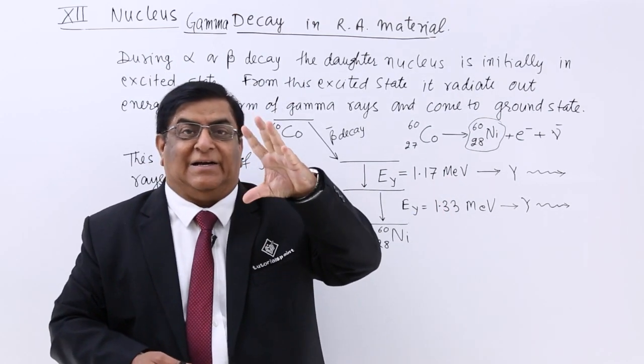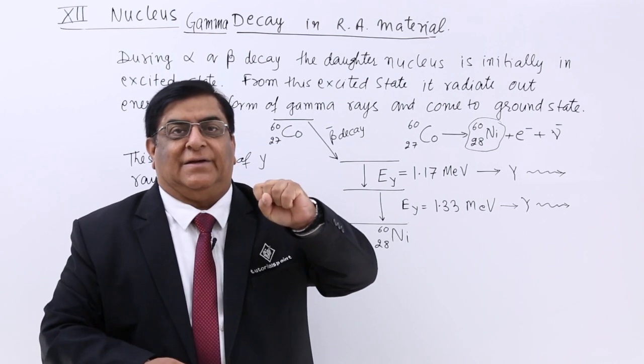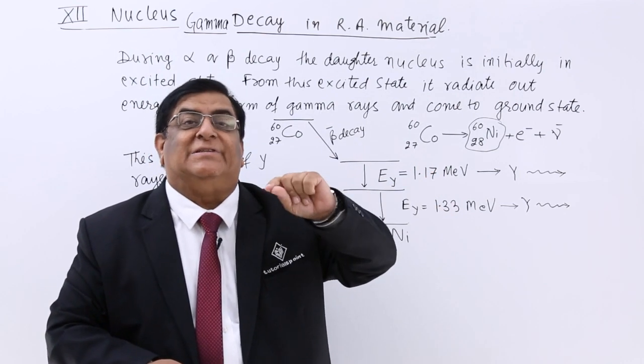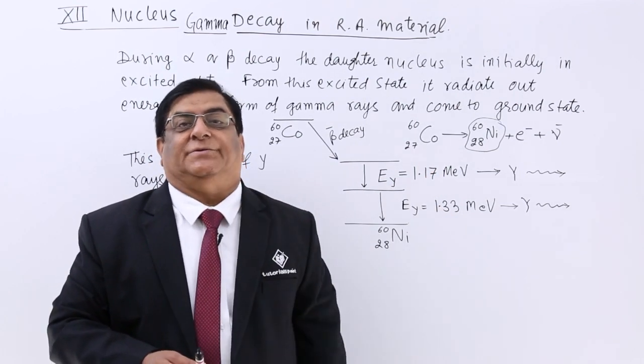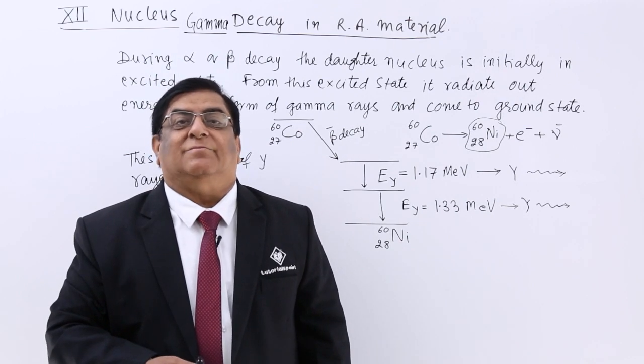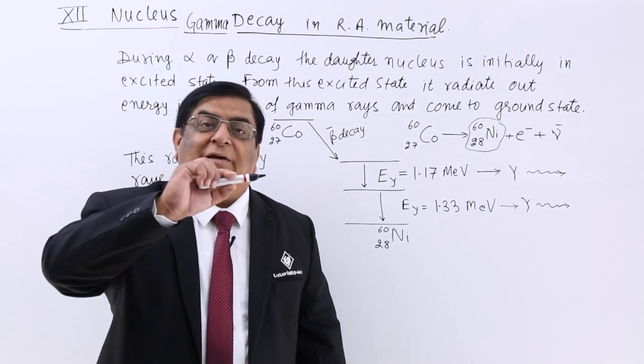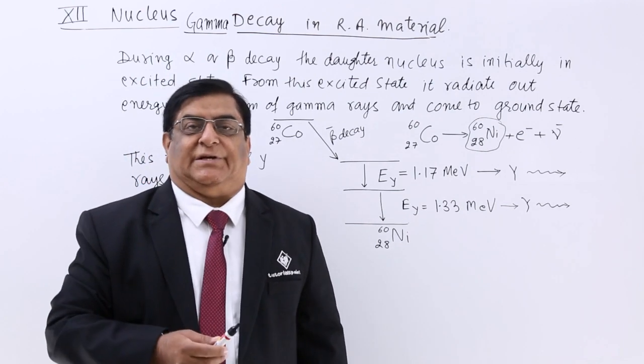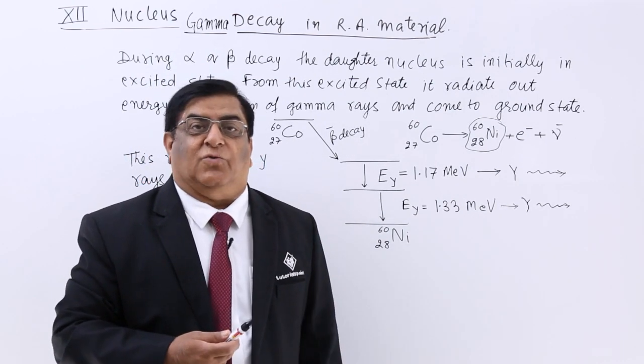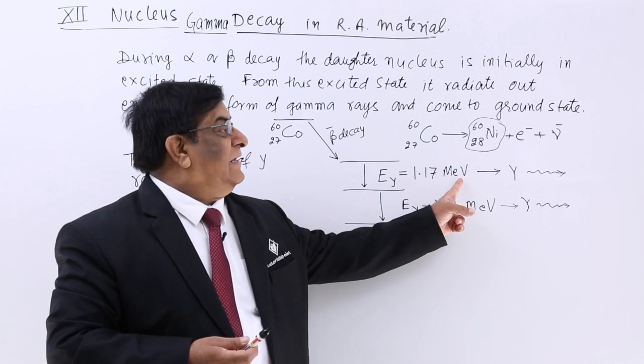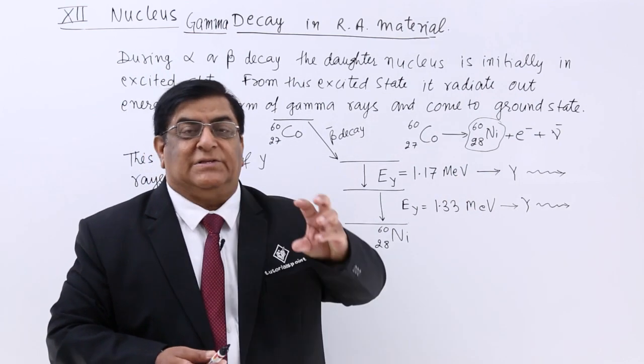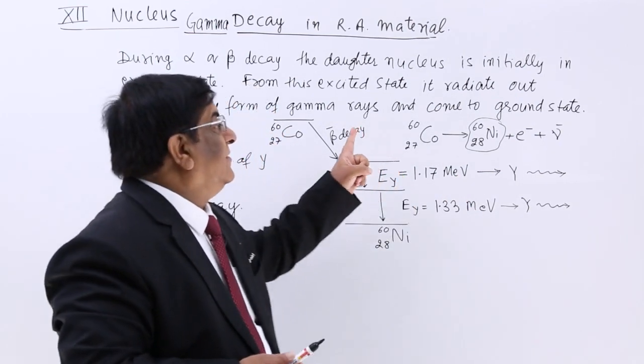You know when the atom is excited and comes back to ground state it also gives out energy which is in the range of electron volt. That is by the excitation of atom and when the atom comes back to its ground state. That is in the range of electron volts but here it is in million electron volts because it is nuclear reaction.